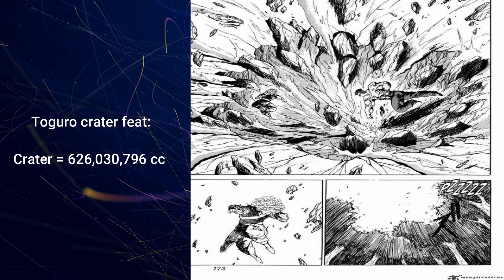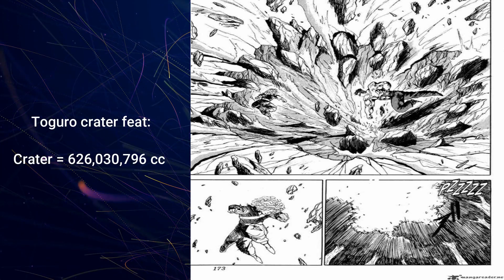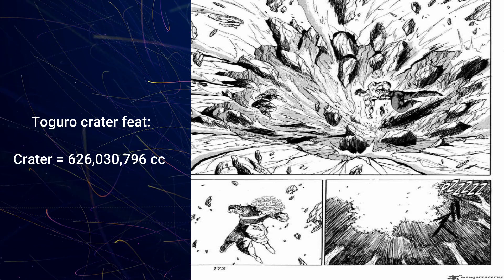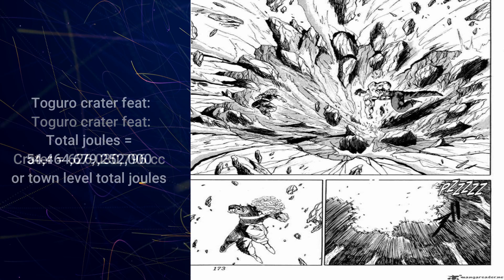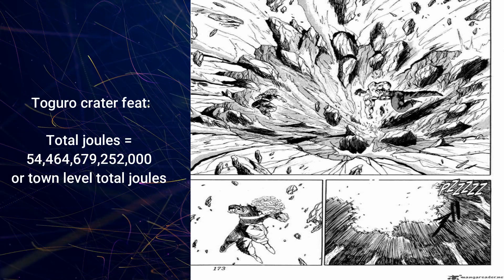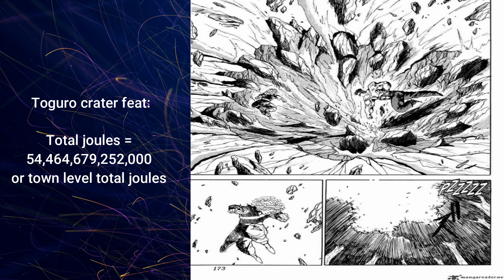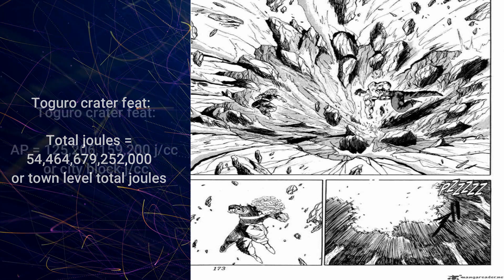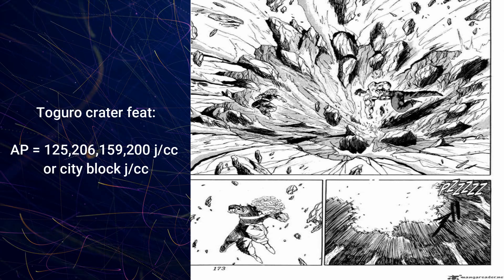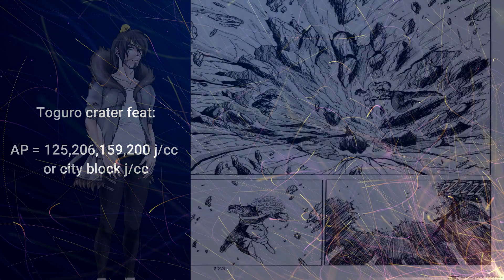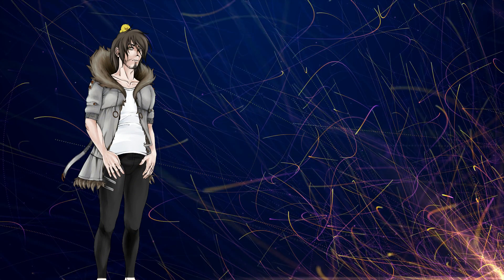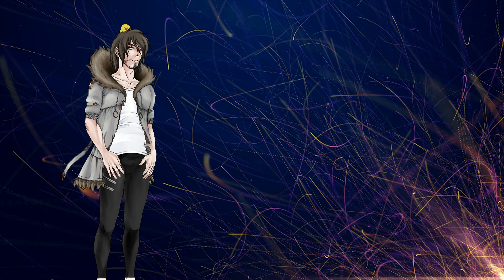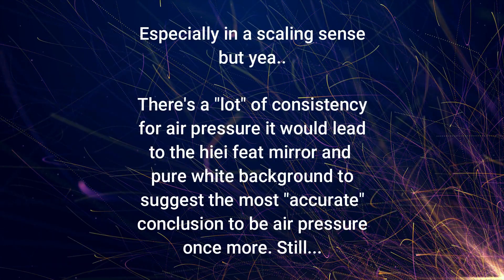What we find is a total volume of this many cubic centimeters of cratering, which is 87 joules per centimeter cubed. This gives us a total joules of this many — or town level total joules — and leads to the AP, which is based on the cubic centimeters of his fist, where he's showing this many joules per centimeter cubed, or city block level AP. If you don't believe it was air pressure that caused the crater, then yes, the feat calcs much weaker, but you do have to kind of go against everything else, especially with Hiei.